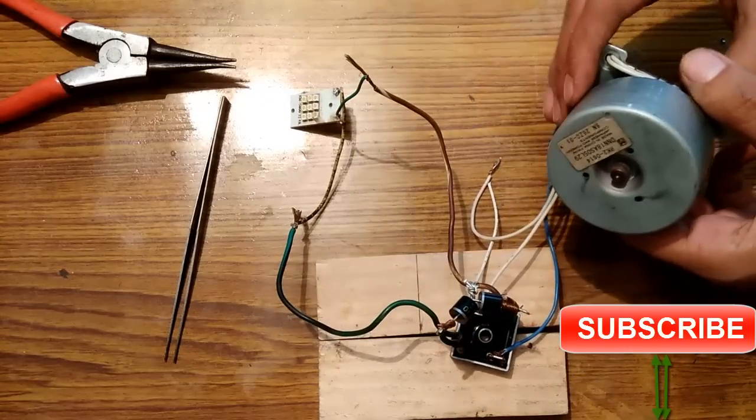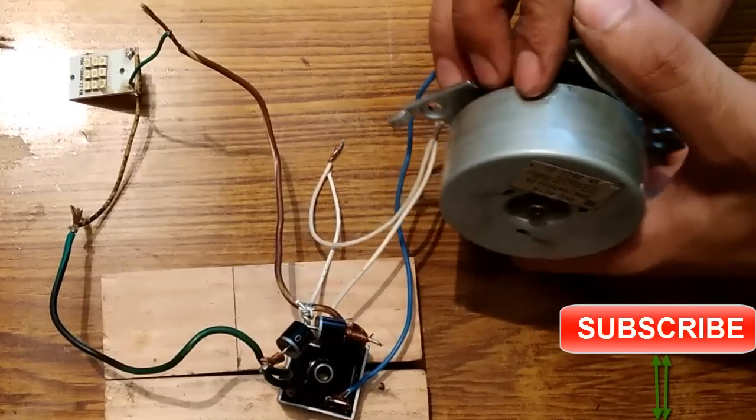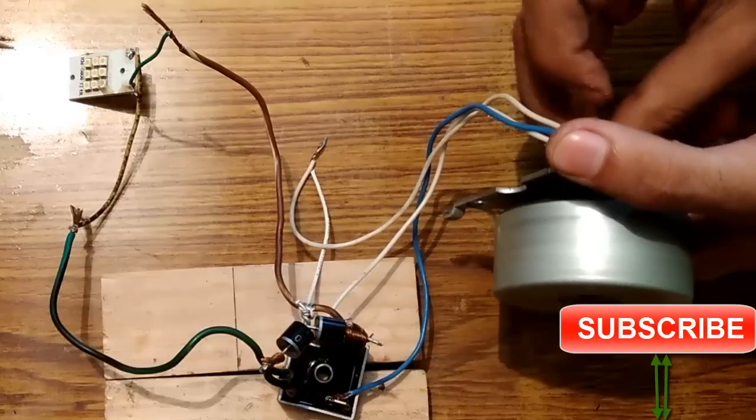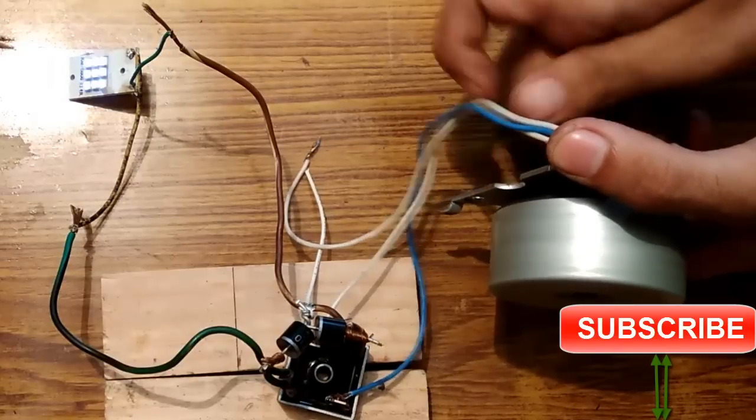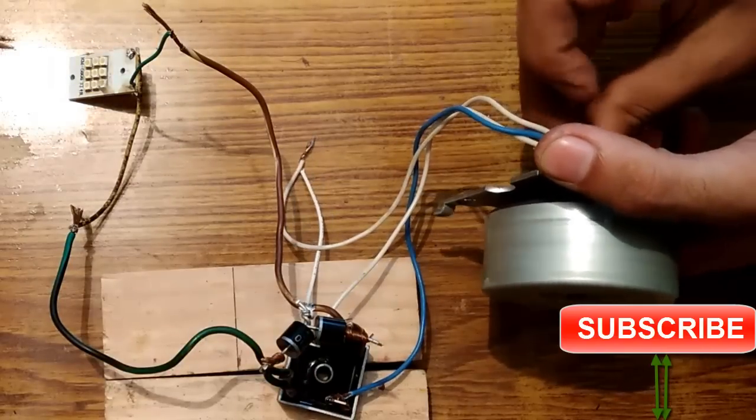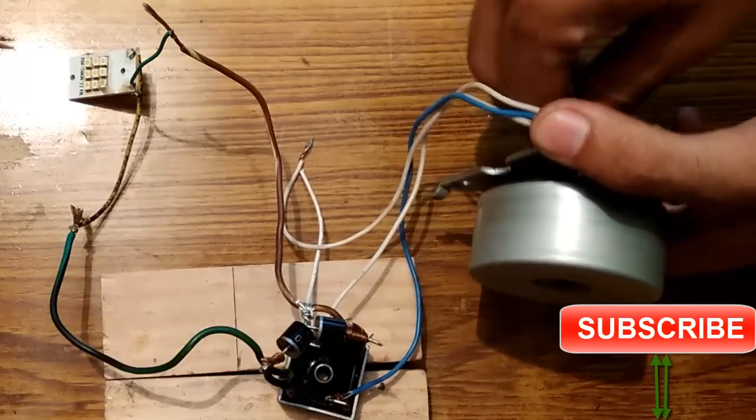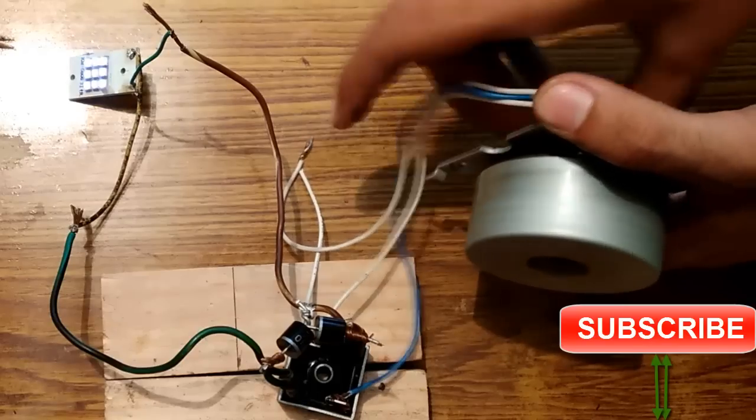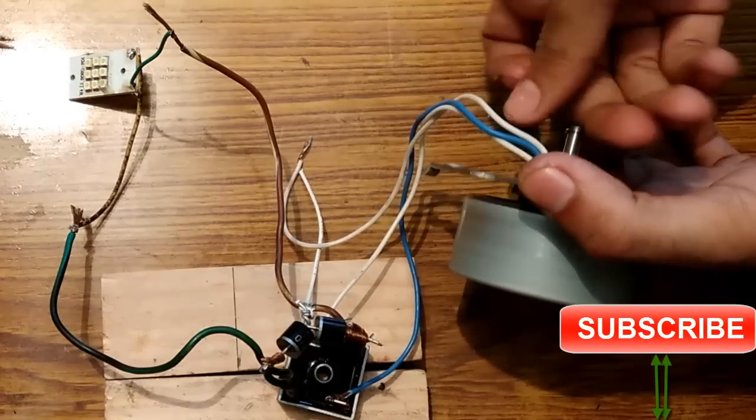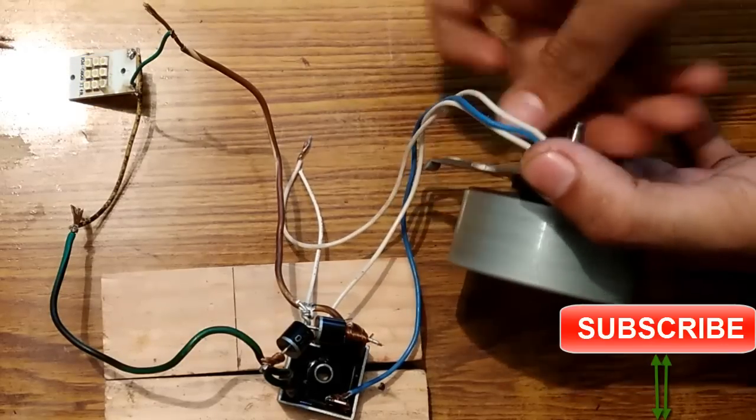So the connection has been done. Now when I rotate the generator, the bulb should light up. So you can see that it is working. And it will work in either direction. Now I'm rotating in this direction and it is lighting up.